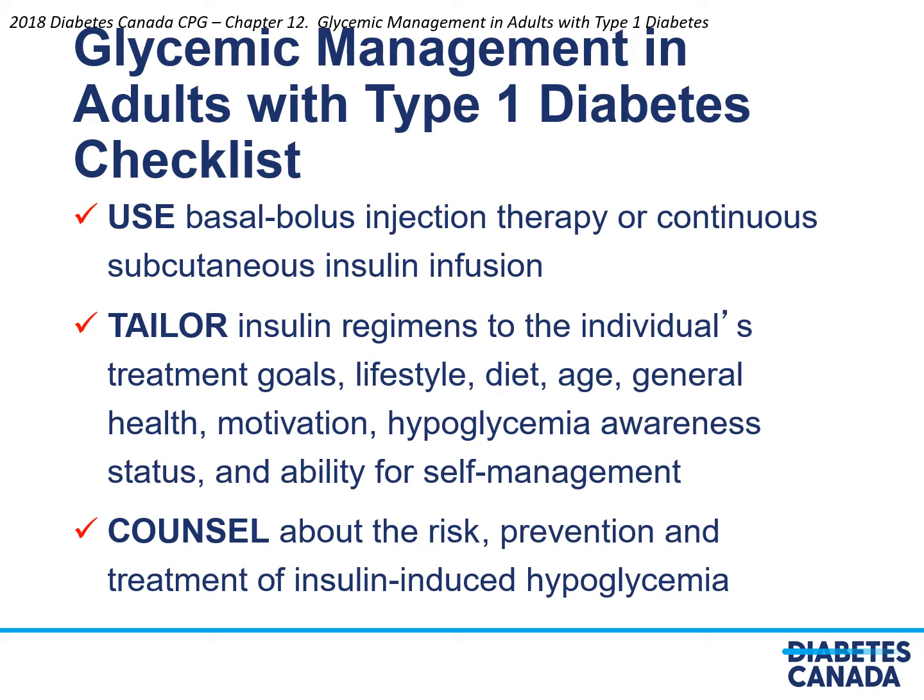Here is the chapter checklist: use basal bolus injection therapy or continuous subcutaneous insulin infusion; tailor insulin regimens to the individual's treatment goals, lifestyle, diet, age, general health, motivation, hypoglycemia awareness status, and ability for self-management; and counsel about the risk, prevention, and treatment of insulin-induced hypoglycemia.